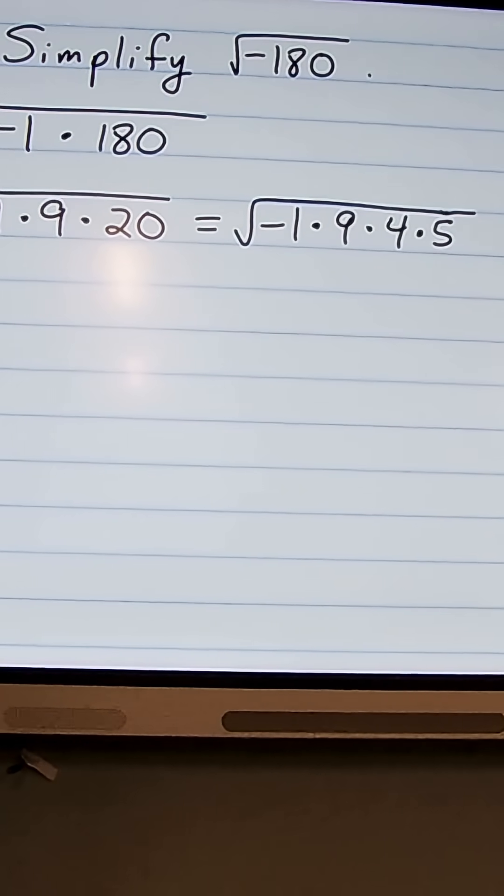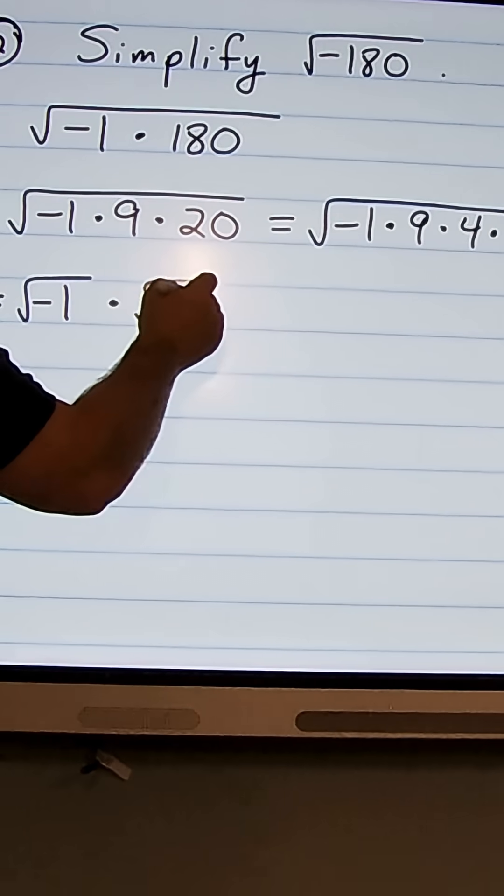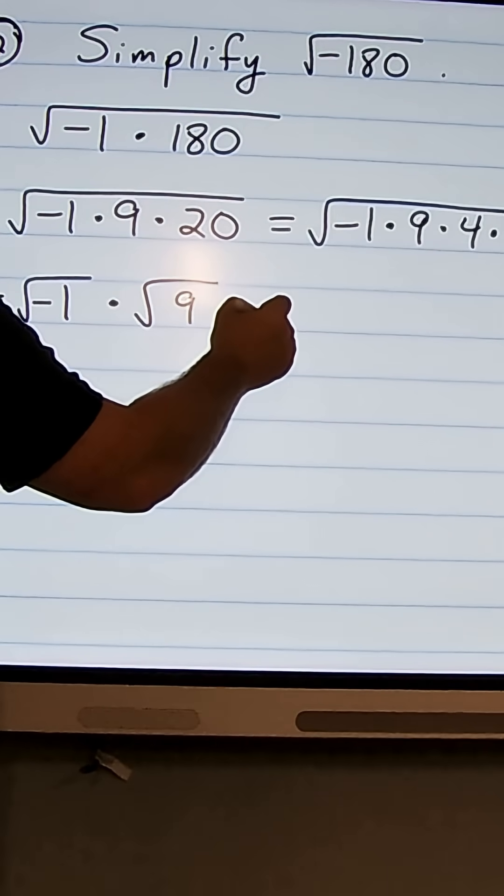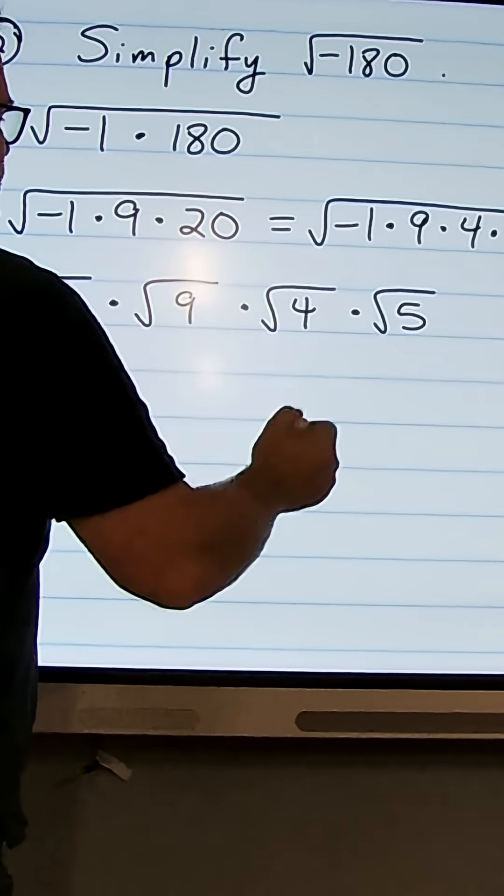So we can have the square root of negative 1 times the square root of 9 times the square root of 4 times the square root of 5.